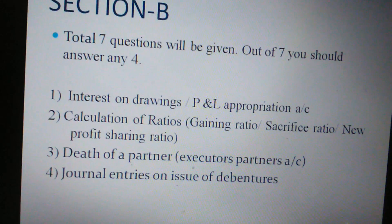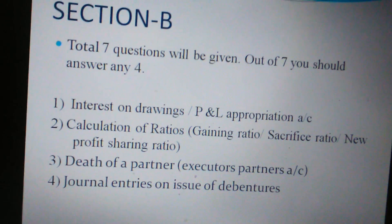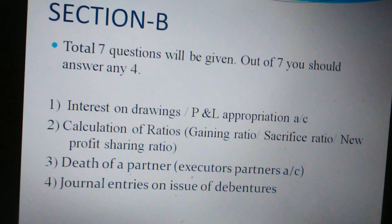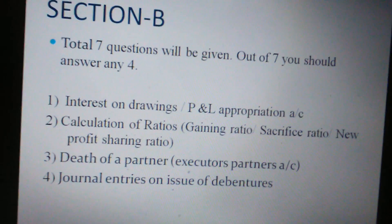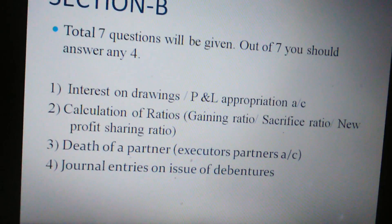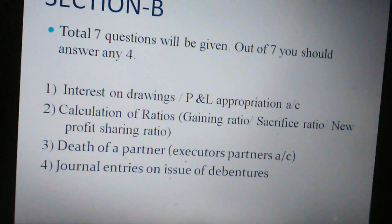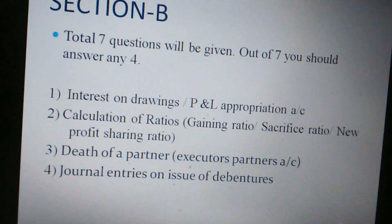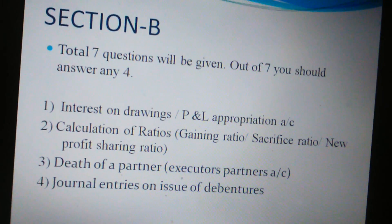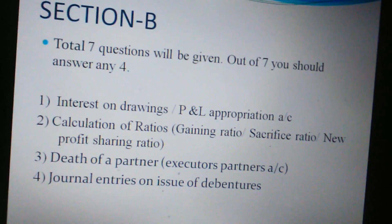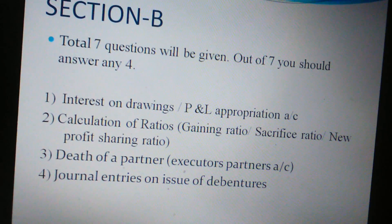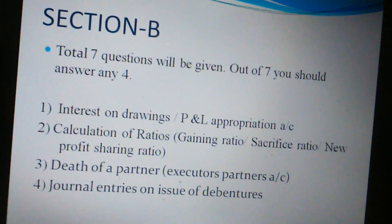For ratios, read all the cases: gaining ratio has three cases, sacrifice ratio has five cases, and new profit sharing ratio has five plus five — ten cases in total. Next is death of a partner, where you have to prepare the executor's account, or sometimes an executor's loan account, though that is rare.